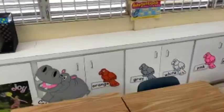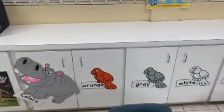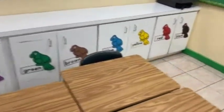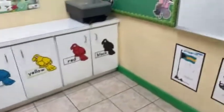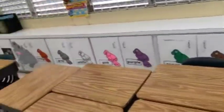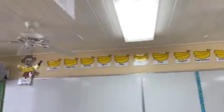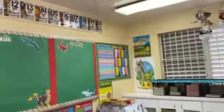Down here I also have the colors — you can find these at The Creative Classroom. She actually did these for me at a good price — I think I paid 150 and got about six things. What came in it was the colors, shapes, numbers, alphabet, months of the year, and the days of the week.